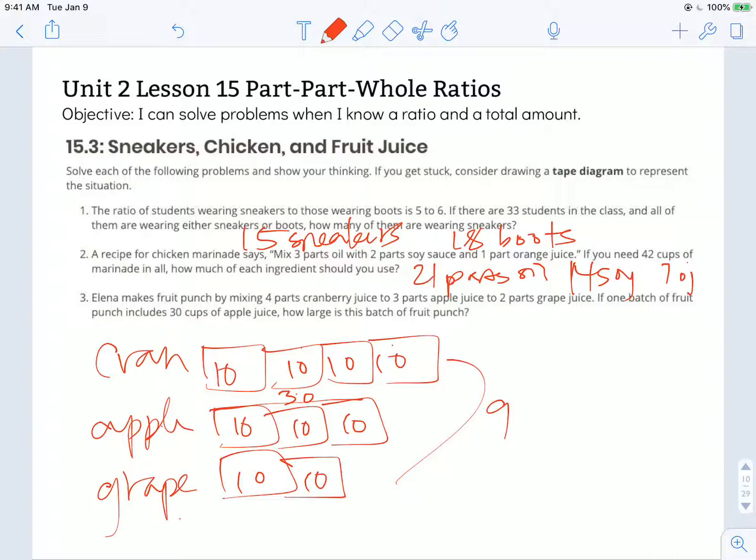So the whole batch is going to be 10 times as much of each of those parts, for a total of 90 parts, or in this case 90 cups of juice in total, a fruit punch.